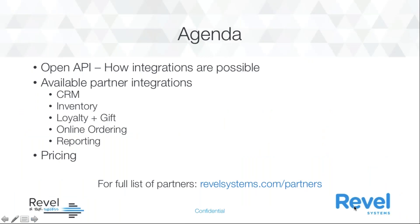A look at today's agenda: we're going to look at the open API — what exactly is the open API that we have with Revel and how integrations are possible. Then I'm going to go into a few of the available partner integrations. This isn't a complete list; that list of partners is far too long to put into a webinar, but I did want to highlight a few of the popular ones, some of the benefits and some of the ways they integrate with Revel. Lastly, we're going to look at some pricing. For a full list of partners, go to revelsystems.com/partners. The information I'm giving here is pretty high level, so for more detailed information and to move forward with a type of API or integrated partner, you'll want to contact your sales rep.